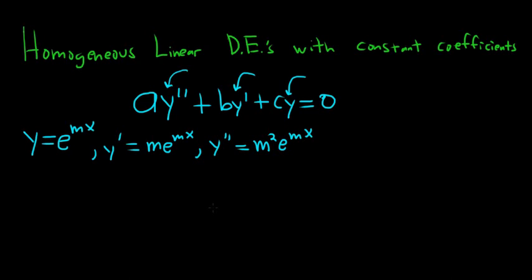So then you would plug it into your DE. If you didn't know how to do this, you'd say maybe this is the solution. So it would be a m squared e to the mx plus b m e to the mx, plugging in the derivative, plus c e to the mx equals 0, just plugging in the first, second derivative, and the function as well.